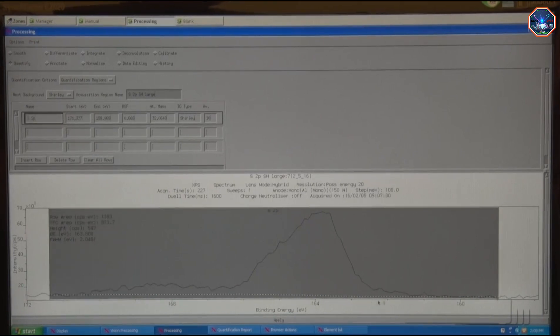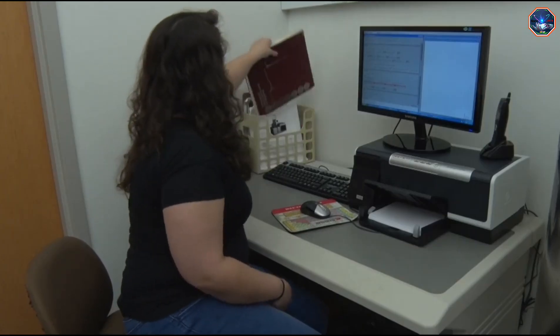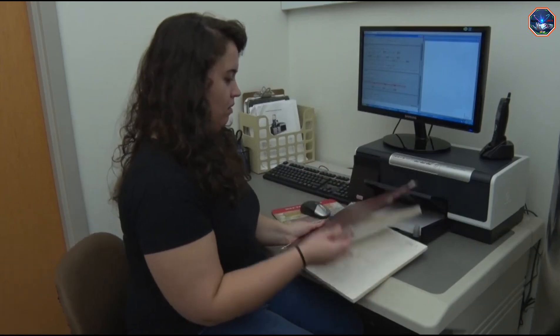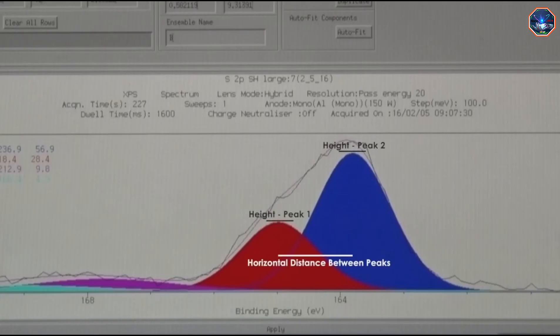The first step is to fit a baseline to the data. Then we can start adding peaks to fit the data. The sulfur 2p line is composed of a doublet and the spacing between the peaks is published in reference books. The software will allow me to add a new peak with the correct position and relative height to the original peak.